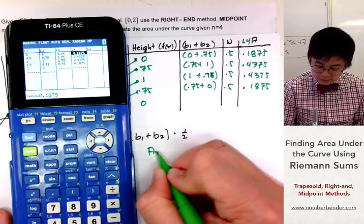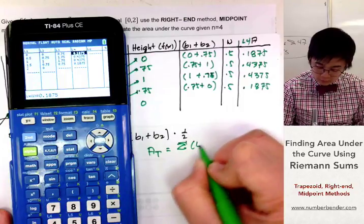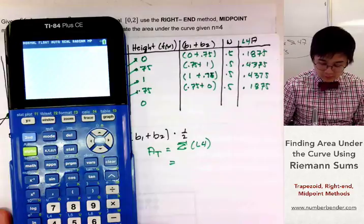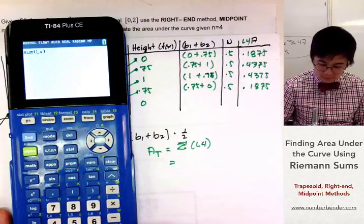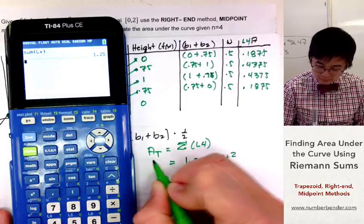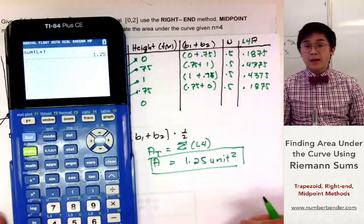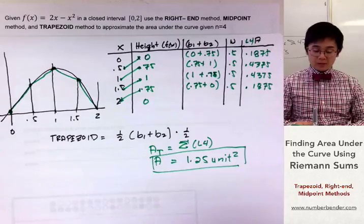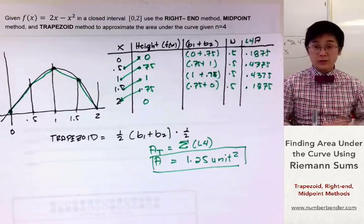The area of the trapezoid is the summation of List 4. Using second STAT, MATH, sum of List 4, the area is 1.25 — the same as our right-end method. These are the three methods on how to use Riemann sums for approximating the area under the curve.